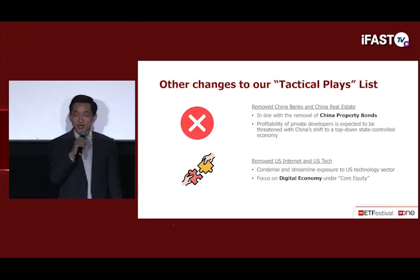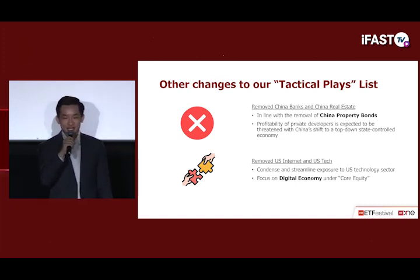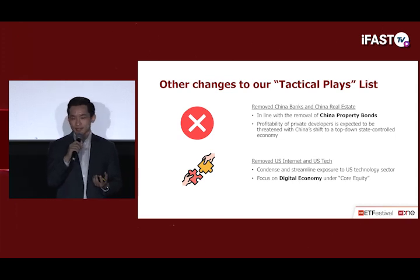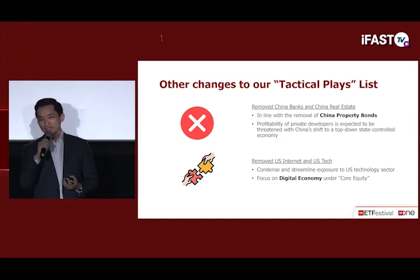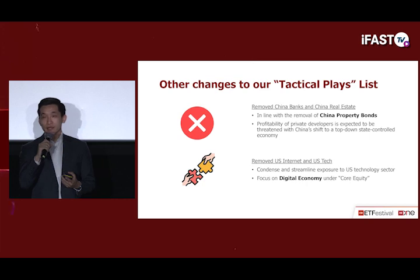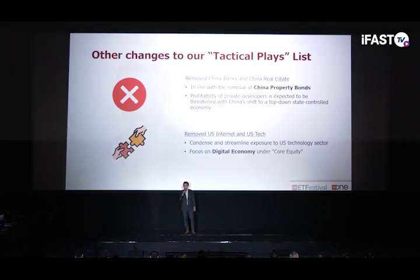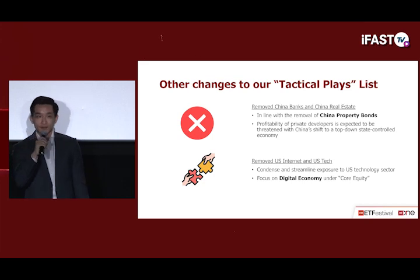We have also made notable changes to the thematic place category. We removed China banks and China real estate, as this category was crowded with China sectoral ETFs. In line with the removal of China property bonds, we believe the long-term profitability of private developers is threatened by China's shift to a top-down state-controlled economy. We also removed US internet and US tech subcategories due to overlaps with the digital economy subcategory under core equity. Investors who want US technology exposure can look at the digital economy ETF under core equity.